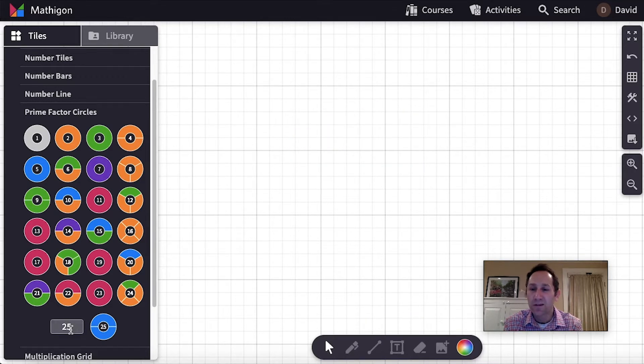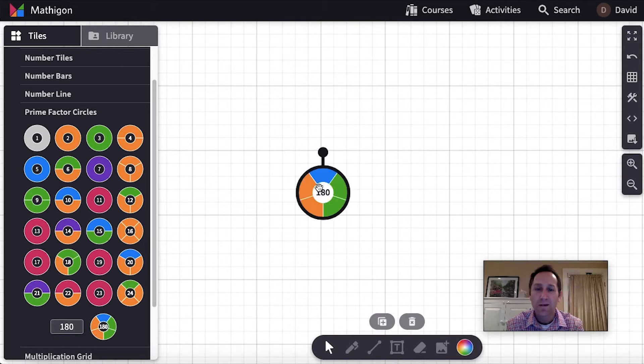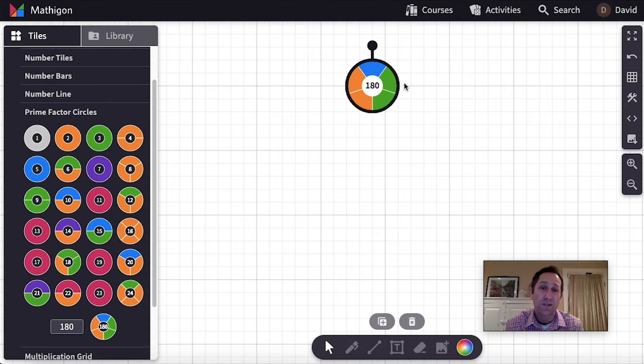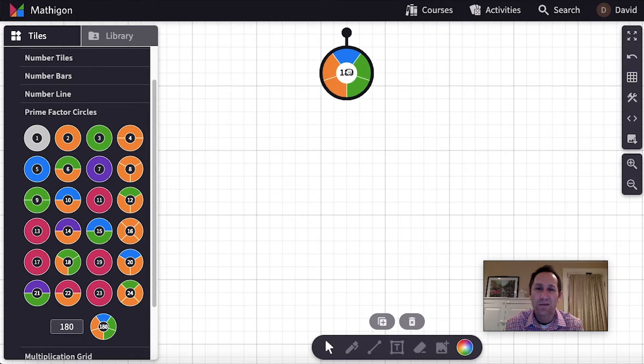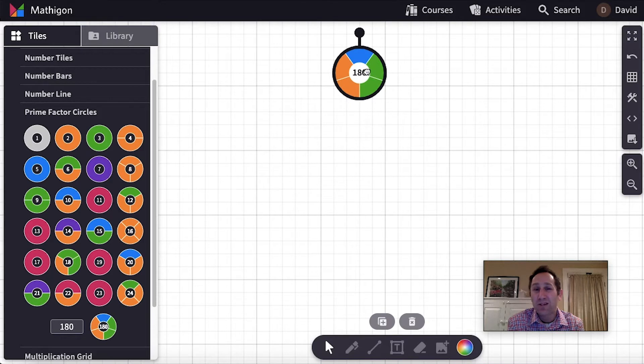What I would do is as a class I would create the number 180. If this was the same day or a day after I had done the number tiles of 180, I might choose a different number so the factor pairs aren't totally fresh in their head. But for the purposes of continuity of the videos I'm going to do 180 here.